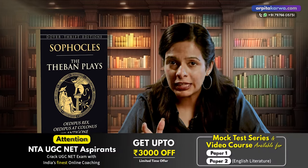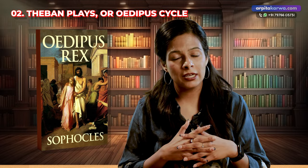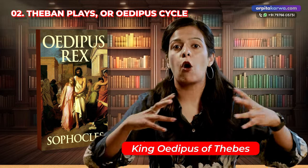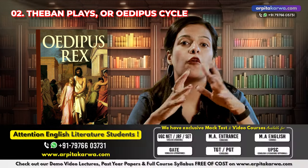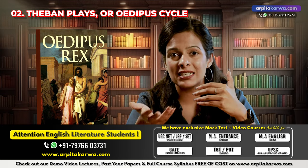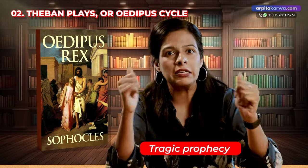The next trilogy is the Theban Plays, or the Oedipus Cycle, written by Sophocles in the 5th century BC. It deviates from the true trilogy concept as the plays were written separately with different themes. The first play is Oedipus Rex, or Oedipus the King, which revolves around King Oedipus of Thebes who seeks to solve the city's plague by discovering the murderer of the former King Laius. As Oedipus investigates, he unwittingly reveals a tragic prophecy — that he will kill his father and marry his mother.